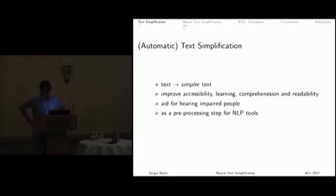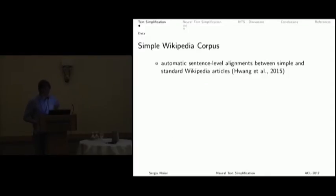You have English text that you want to simplify to improve accessibility for people, increase learning comprehension or readability. You might want to aid hearing impaired people, and you can also use it as a preprocessing step for NLP tools. Examples of datasets that make use of simplification are the Newsela project, Simple English Wikipedia, or subtitles made for people with hearing disabilities.